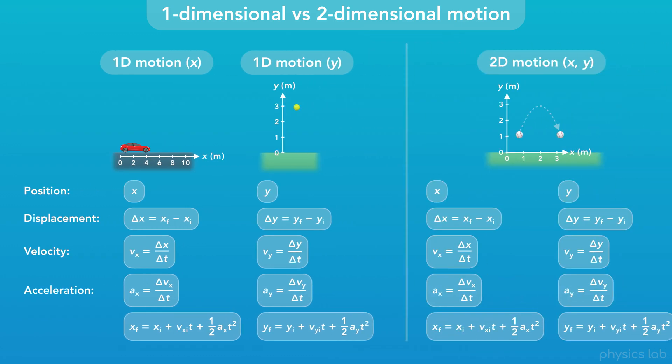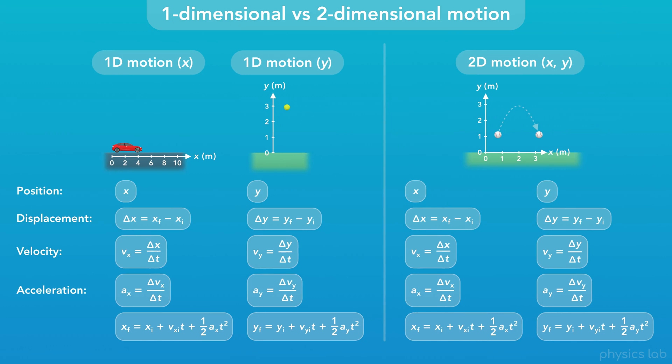But if an object is in 2D motion, then it has motion in the X direction and the Y direction at the same time. So we need both variables and both sets of equations to describe the motion of the object.